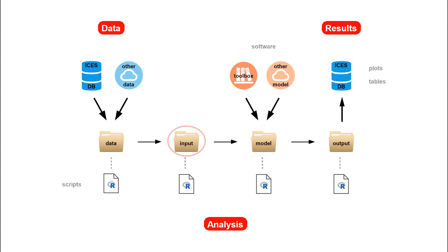Moving on to the input folder, the task there is to convert the data from the most general format — cross-tab year by age usually — into the model-specific format. That will depend on the model; it can be one big text file, an R-list, or a number of input text files, whatever the model will read. The model folder is about running the model, which can come from either a toolbox of commonly used models, or any model can be used within this folder.